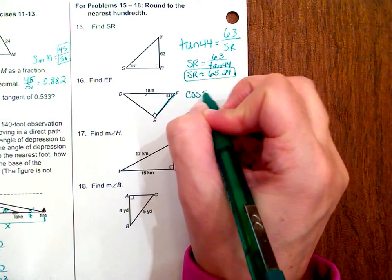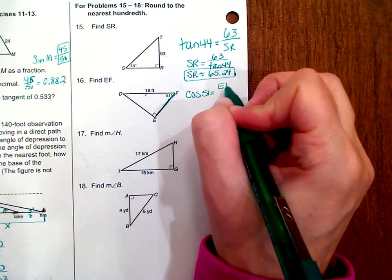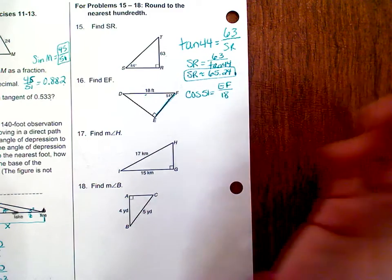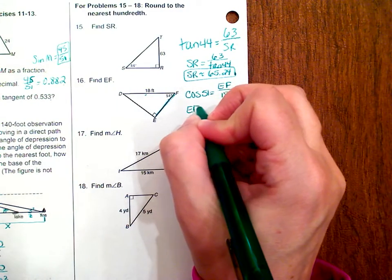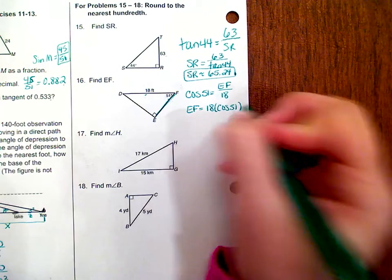So the cosine of 51 is equal to adjacent, which is EF over 18. Since this is in the numerator, we're going to multiply those, so EF is equal to 18 times the cosine of 51.